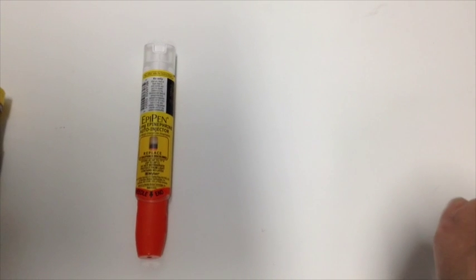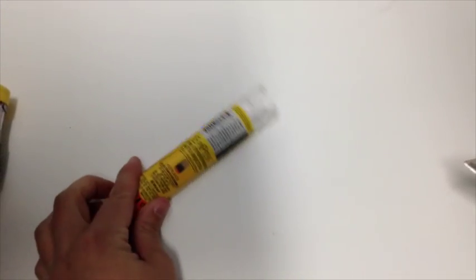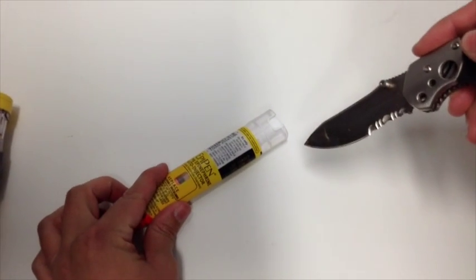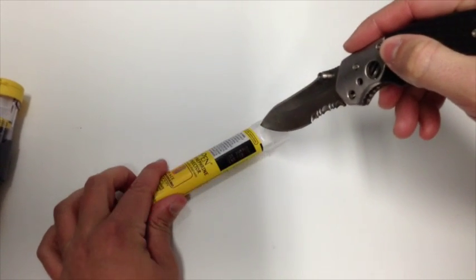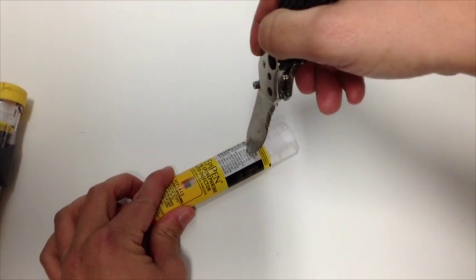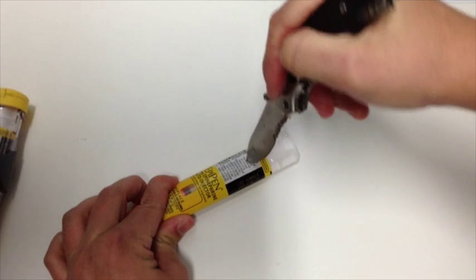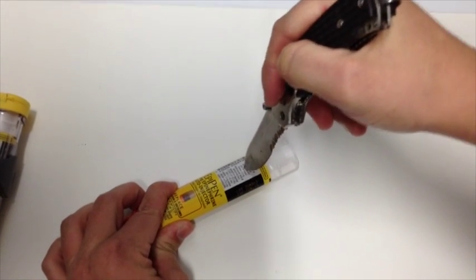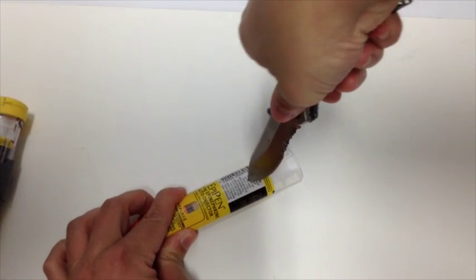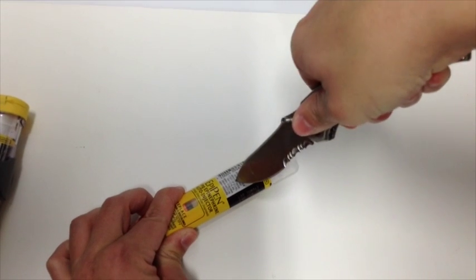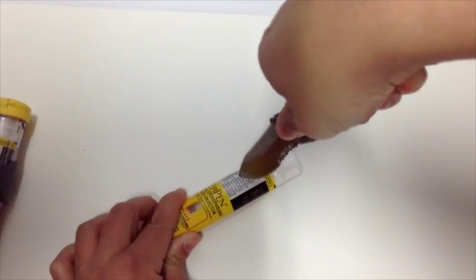So there is a spring inside here, so you have to be very careful once you puncture it and try to open it up because parts will kind of spring everywhere. So what we're doing here is just placing a small puncture towards the top of the EpiPen, just enough to get through the plastic and get to the point where we can cut it open further.